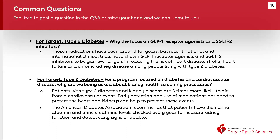Why do we have a focus on GLP-1 receptor agonists and SGLT2 inhibitors? Recent national and international clinical trials have shown how these medications can be game changers in the treatment of type 2 diabetes and in reducing the risk of heart disease, stroke, heart failure, and chronic kidney disease among patients with type 2 diabetes. We want to learn more about how organizations are prescribing and managing these medications so we can better support them. Last year we learned that a common barrier was simply not having these medications on many organizations' formularies, and we held a webinar to help overcome that barrier.